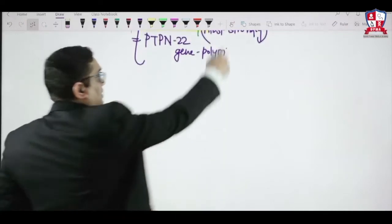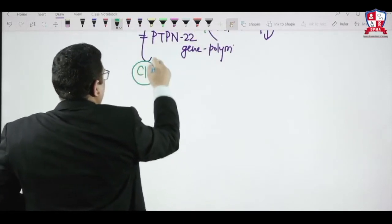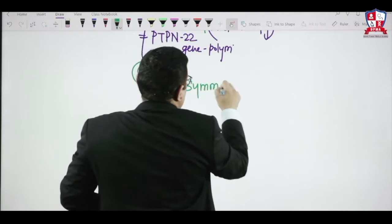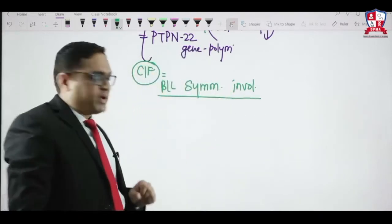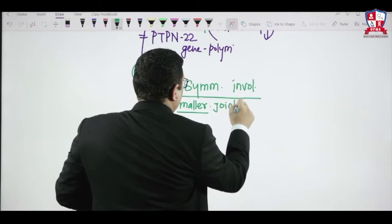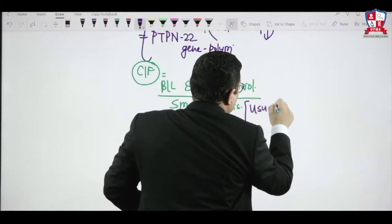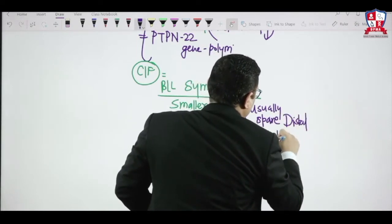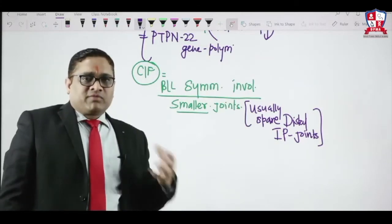Looking at clinical features, there will be bilateral symmetrical involvement — characteristically of smaller joints, not larger joints. Usually, the distal interphalangeal joint is spared, so bilateral symmetrical involvement of smaller joints with DIP sparing is seen in rheumatoid arthritis.